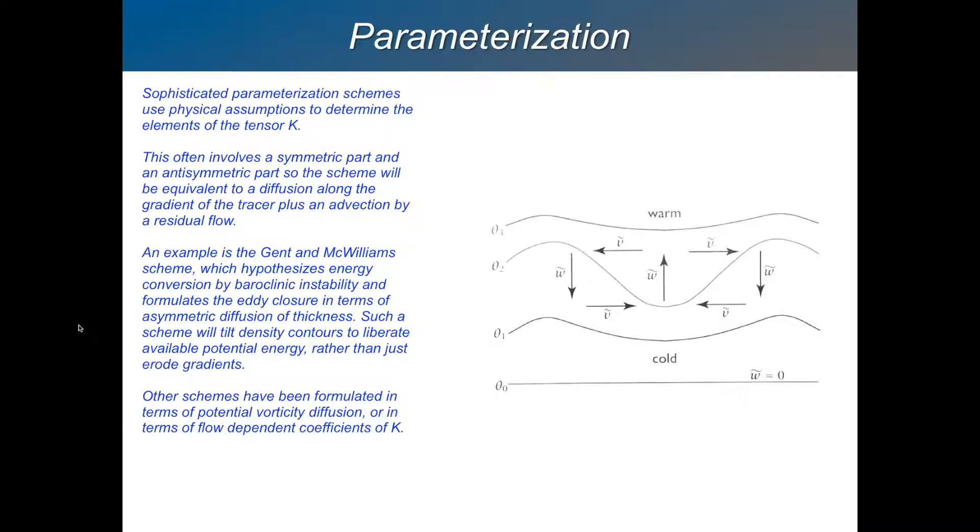And this parameterization, due to Gent and McWilliams, is one approach to doing it. So last time we talked about baroclinic instability. So here's a kind of cartoon of what a density surface might look like near the thermocline. And what would straightforward isotropic diffusion do to that? You'd have gradients here in the density, and they would just get rubbed out, they would get smoothed out, right?